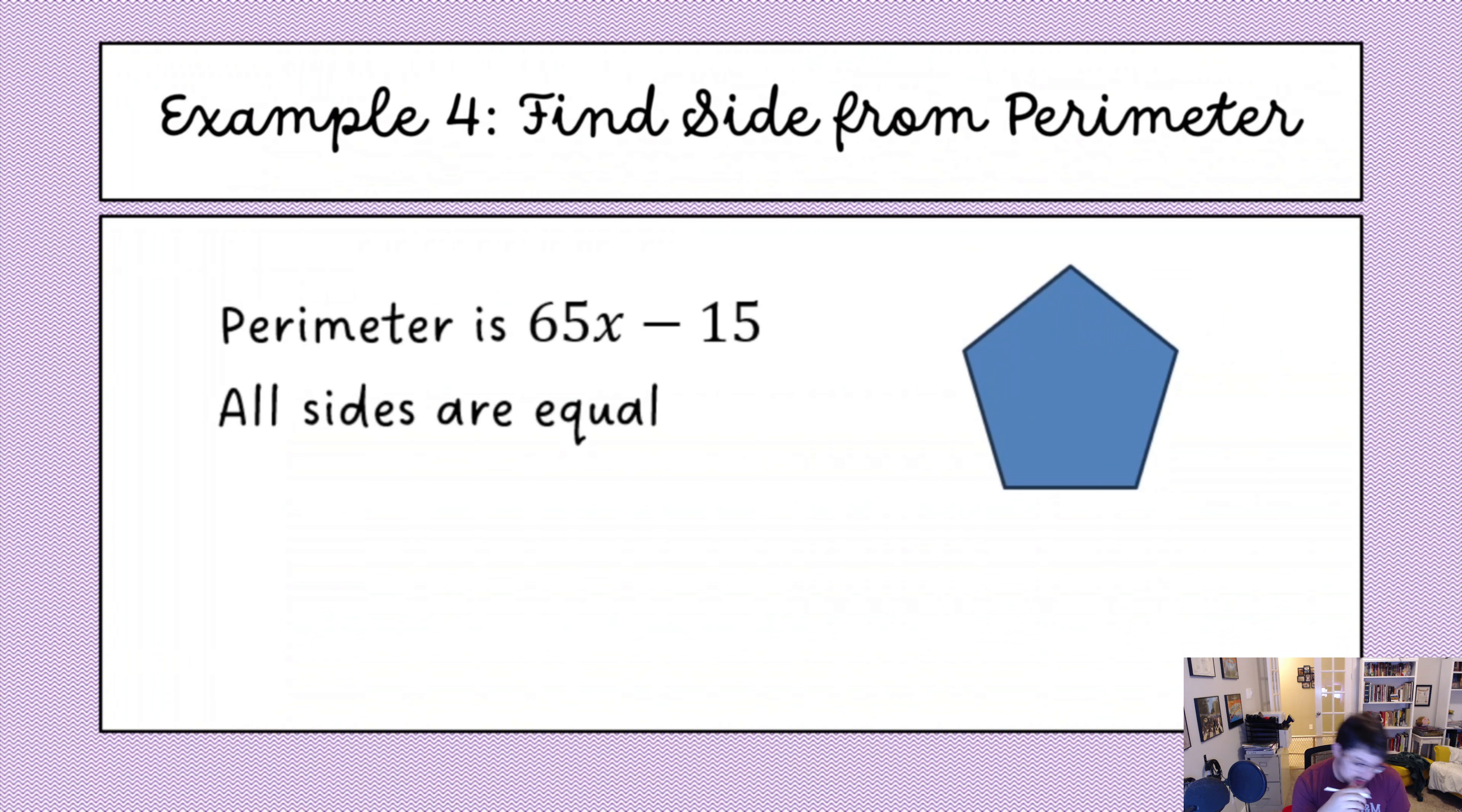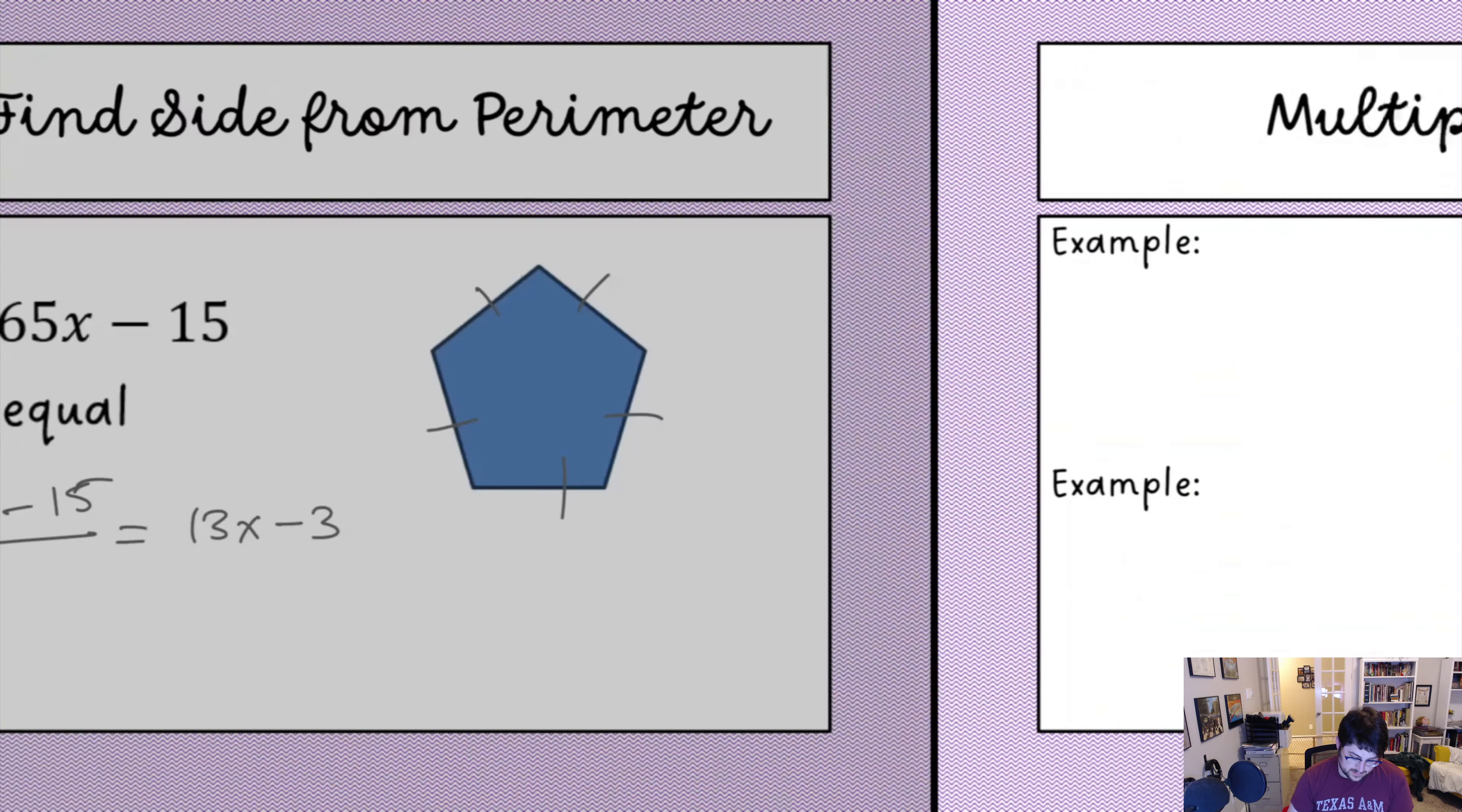All right. Perimeter is this. All sides are equal. Well, how many sides do I have? 1, 2, 3, 4, 5. So, I need to take my perimeter and just divide it by 5. That gives me 13x minus 3. Cool.